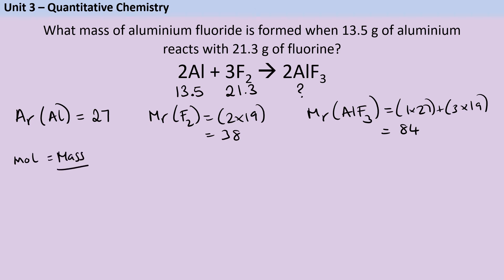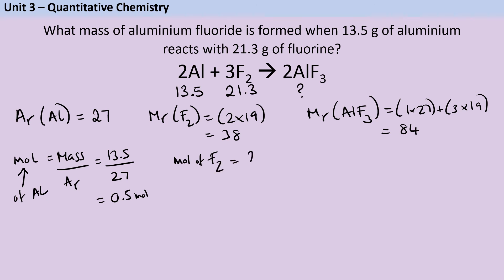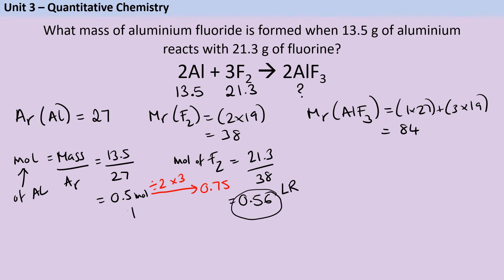Now working out moles: for aluminium, 13.5 ÷ 27 = 0.5 moles of aluminium. For fluorine, 21.3 ÷ 38 = 0.56 moles of fluorine. Working left to right using coefficients: if all 0.5 moles of aluminium reacted, I'd divide by 2 and multiply by 3 to find moles of fluorine needed — that's 0.75 moles. But I only have 0.56 moles of fluorine, so fluorine is the limiting reactant and aluminium is in excess. I won't use up all the aluminium, but I will use up all the fluorine.